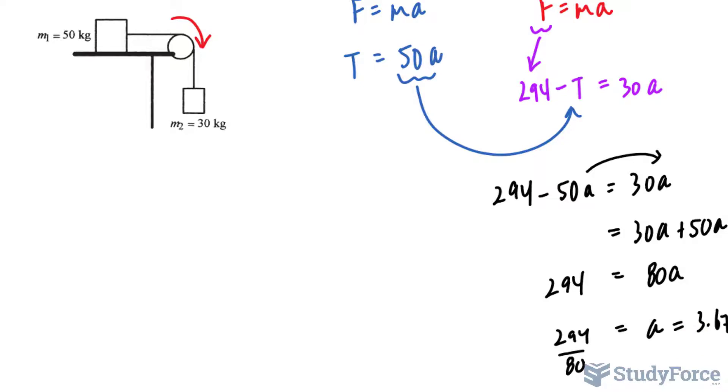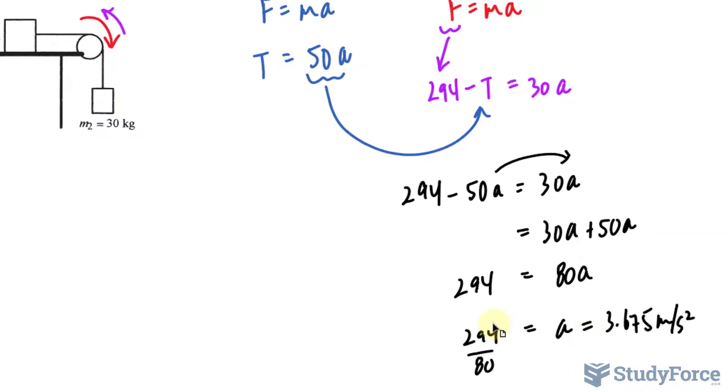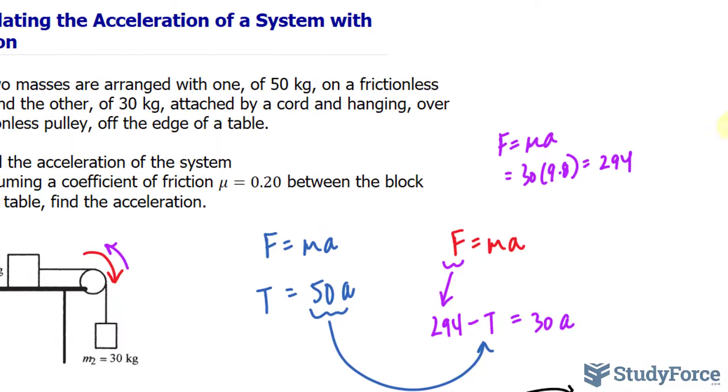Had we assumed that it's going counterclockwise, this expression would change. It would have been T minus 294, and the acceleration would have come out as negative. Because we assume that it's going counterclockwise and it's negative, then you would choose the opposite and say that it is clockwise. So that's the answer for A, and if you want, you can simply write this down as 3.7 meters per second squared.